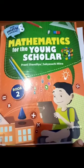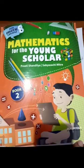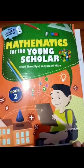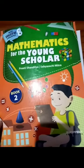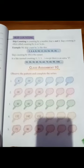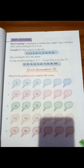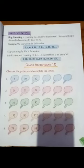Good morning students, this is your maths book and I am your maths teacher. Today's lecture is third, skip counting. Skip counting is counting by a number that is not one. Skip counting is often called counting by twos or fives.